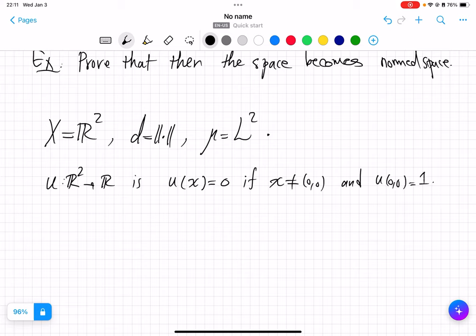So this is a function that is non-zero only at origin with value equal to 1. This is clearly an almost everywhere 0 function.